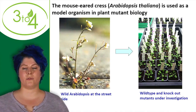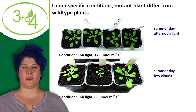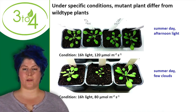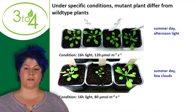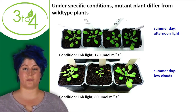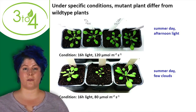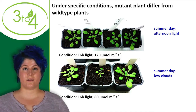In my lab I work with wild type Arabidopsis thaliana and several mutants. When I investigate wild types and mutants I put them under specific conditions. For example, at the top of the picture you see mutants and a wild type under a condition we call 16 hours of light and 120 micromoles per square meter per second — you can imagine that as a summer day in the northern hemisphere with afternoon light.